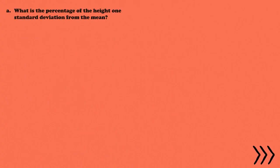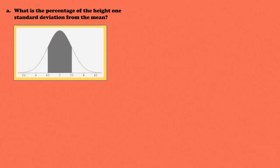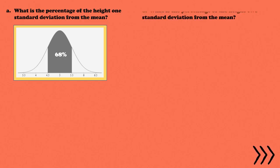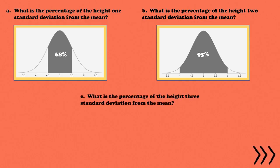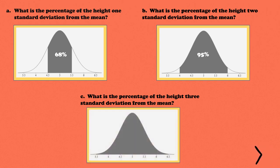First question: what is the percentage of height one standard deviation from the mean? The shaded part corresponds to 68%. Next, two standard deviations from the mean — based on our discussion, two standard deviations away from the mean corresponds to 95%. Last, three standard deviations from the mean: from 3.5 to 6.5, that will be 99.7%.